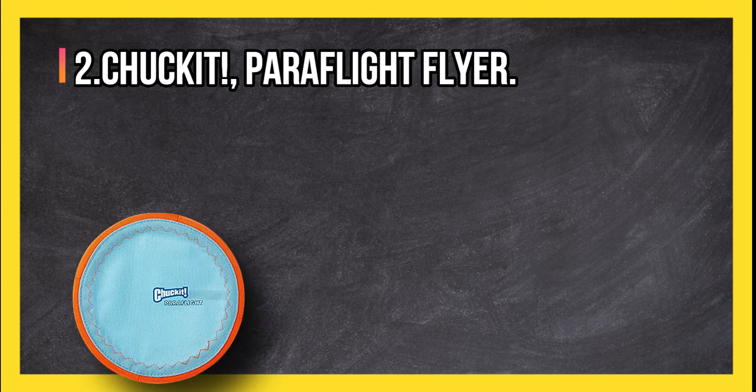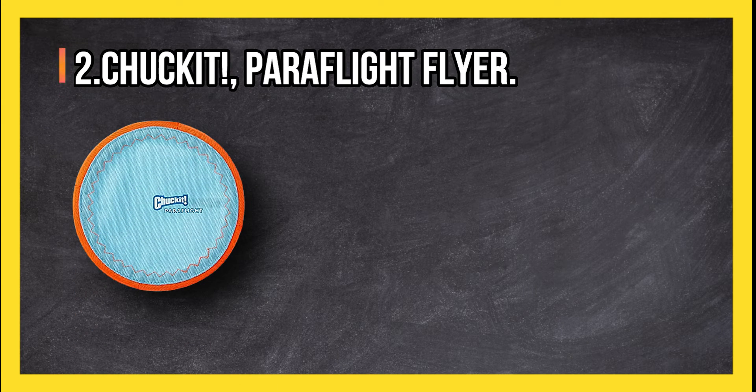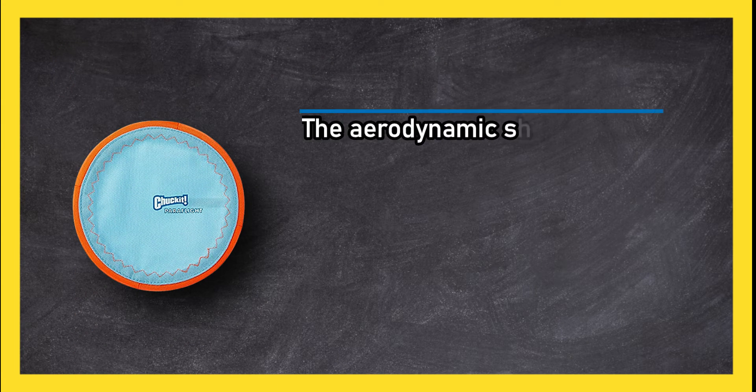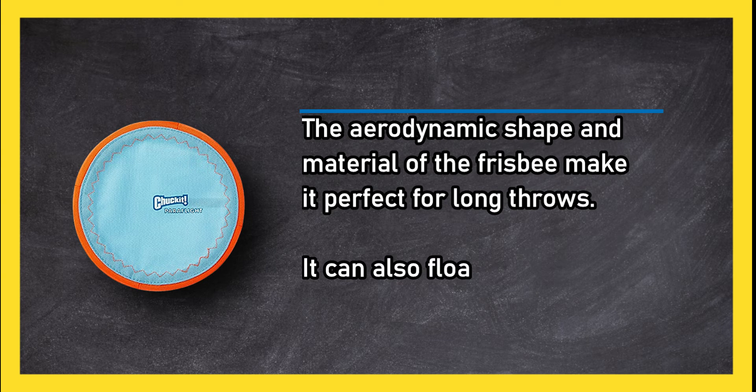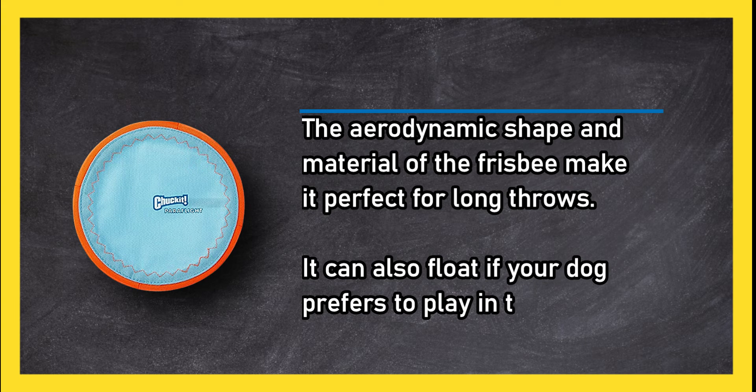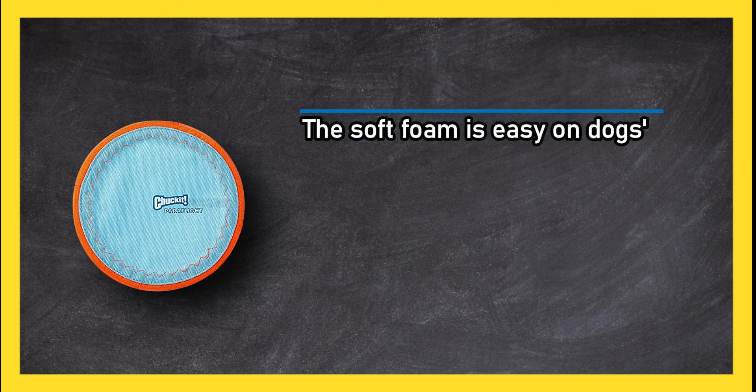At number two, Chuckit Paraflight Flyer. The aerodynamic shape and material of the frisbee make it perfect for long throws. It can also float if your dog prefers to play in the water. The soft foam is easy on dogs' mouths if they chew on the toy.